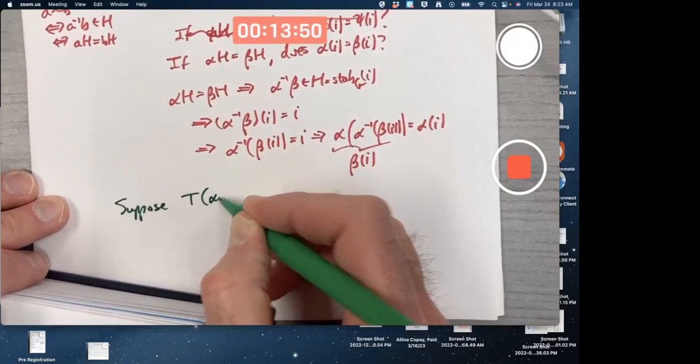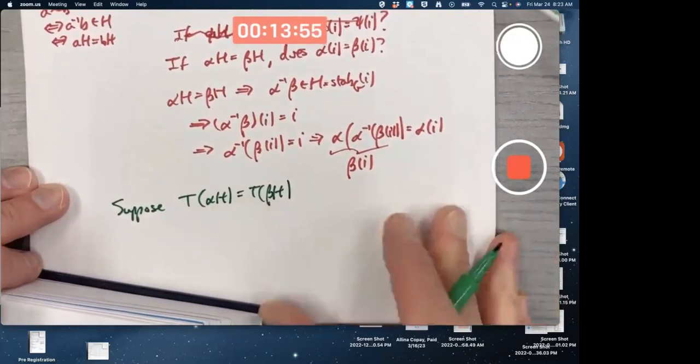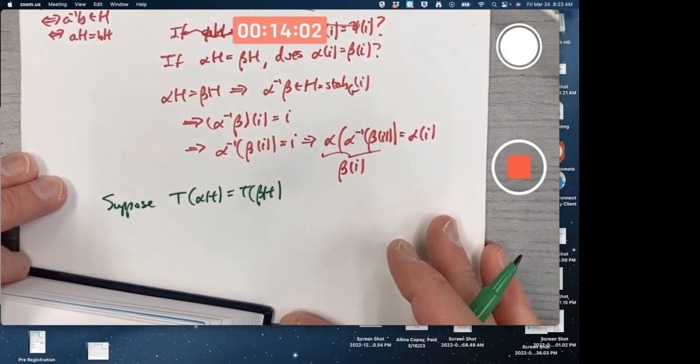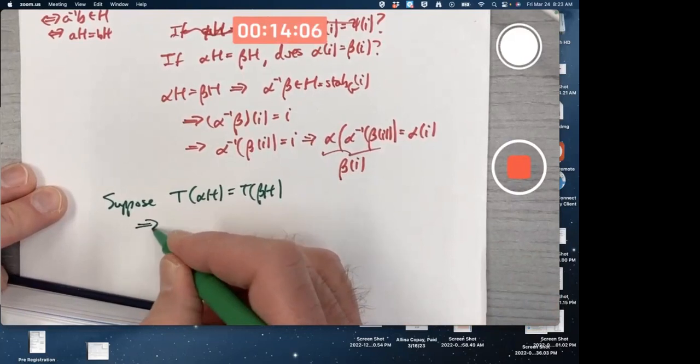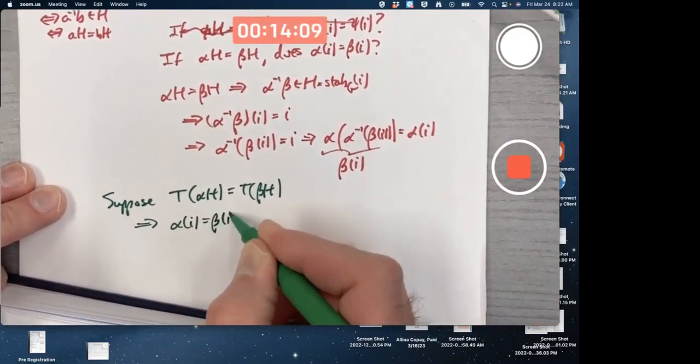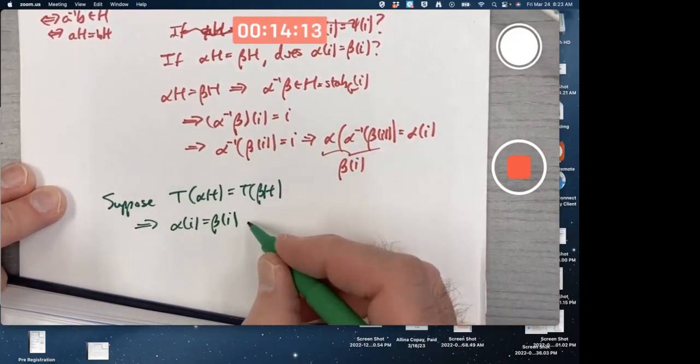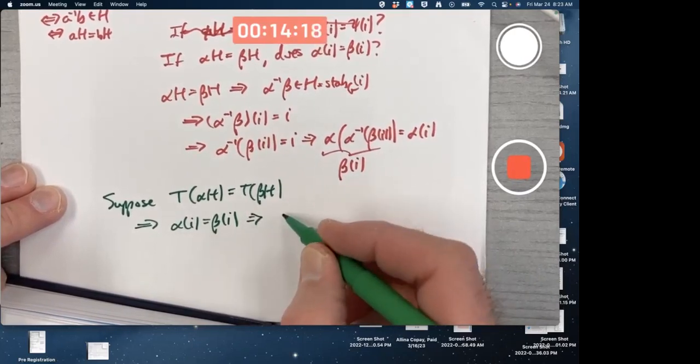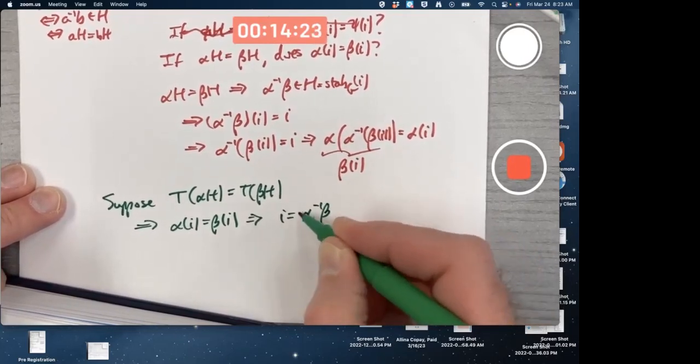T of alpha H equals T of beta H. Suppose the outputs are the same, are the inputs the same? That implies alpha of I equals beta of I. Yeah, now apply alpha inverse to both sides and you'll get I is alpha inverse beta of I.